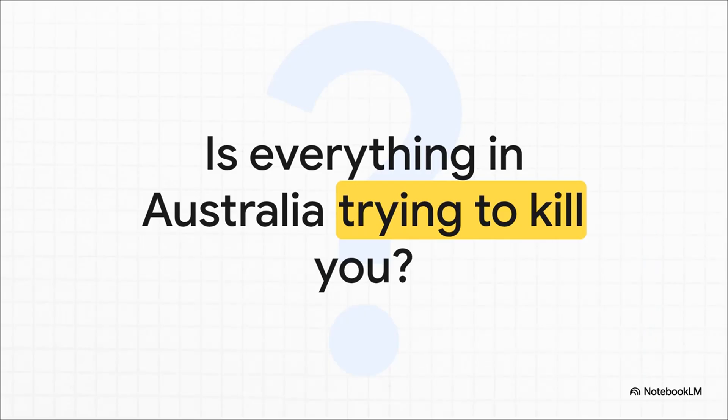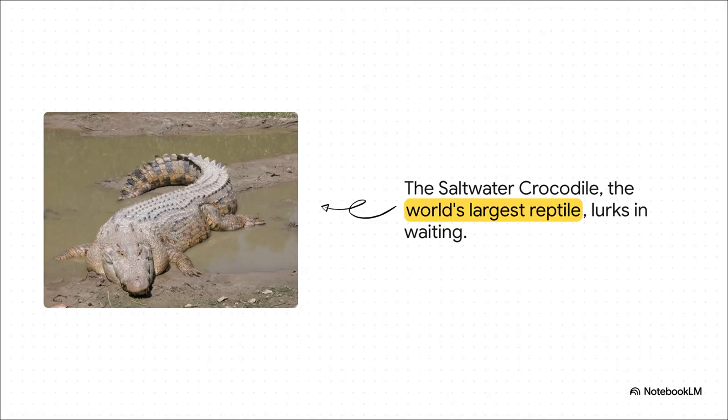You've heard the jokes, right? You've seen the memes. It's the big question that hangs over the entire continent. Is everything in Australia really out to get you? It's a land of absolutely stunning beauty, but it's also got this legendary reputation for danger. And that reputation starts with apex predators like the saltwater crocodile. We're talking about the largest reptile in the world here. A literal living dinosaur that can look just like a floating log right before it explodes from the water. They are the absolute masters of their domain.